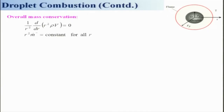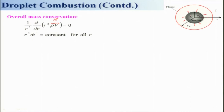The overall mass conservation equation — since we are taking this as a steady process — gives us: (1/r²) d/dr(r² ρv) = 0. This term ρv is basically your mass flux — how much mass is moving out per unit area. This is saying that mass flux times area is conserved at all radial locations, i.e., it remains constant in mass. However, mass flux will be changing. Keep in mind that v is the bulk velocity and ρ is the gas density. This is equation 1.